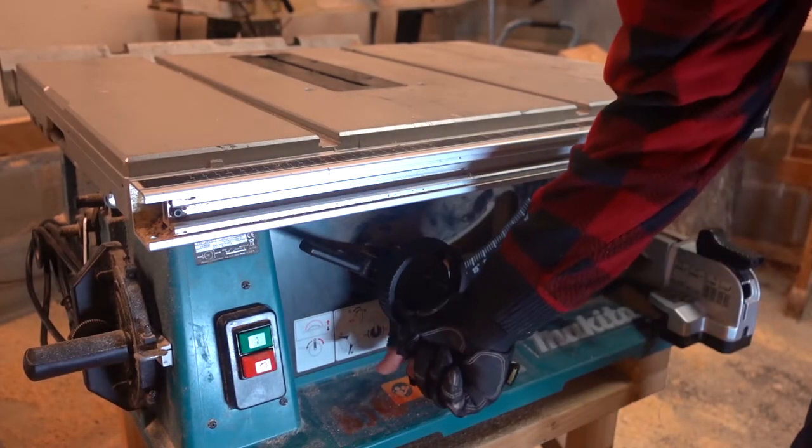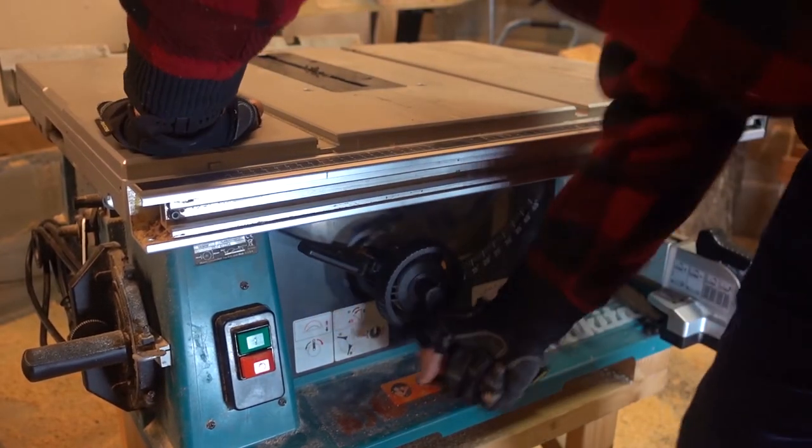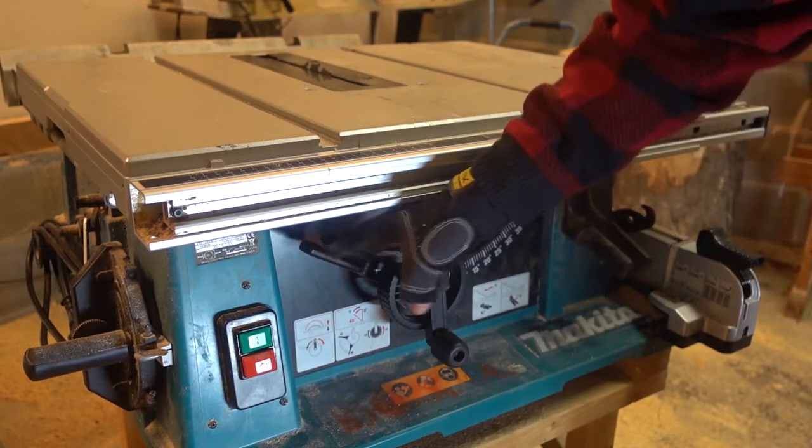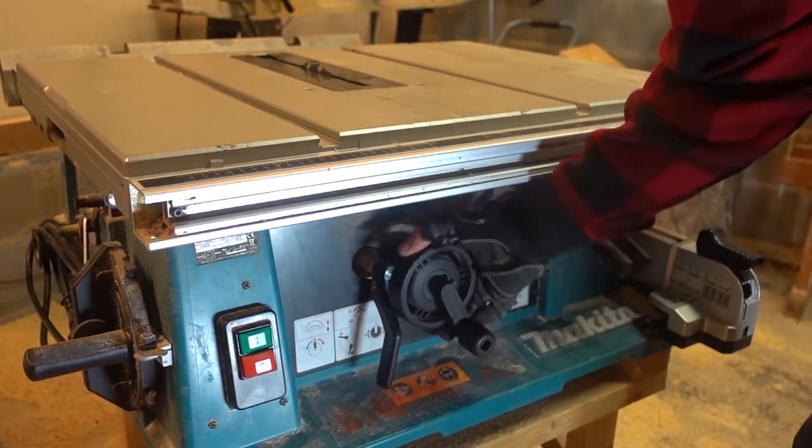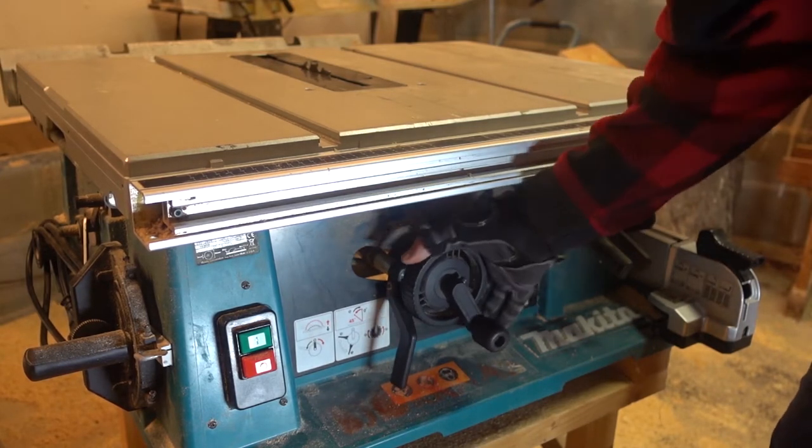On the front of the saw is the turning knob for lifting and lowering the blade. Behind that is a wheel that moves the blade to different angles. To move this wheel you have to push down on the locking lever behind it.